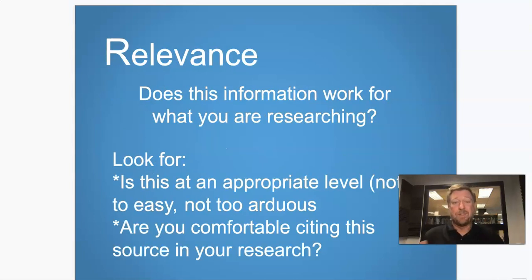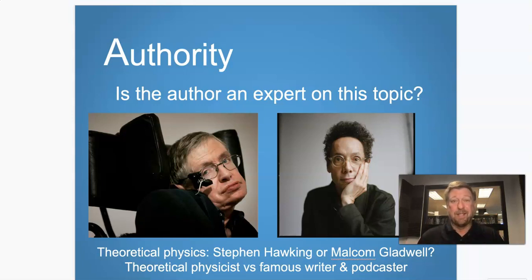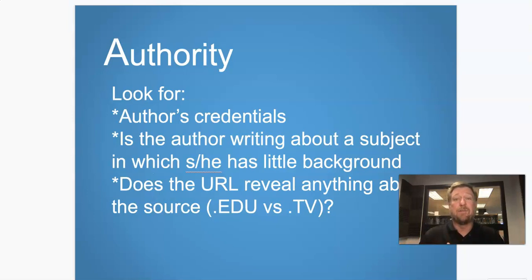Relevance — does it matter to what you're looking for? Is it at an appropriate level, kind of the Goldilocks test — is it too easy, is it too hard? Are you comfortable citing this in your research? Authority — is the author an expert? If you're doing something about theoretical physics and have a choice between Stephen Hawking and Malcolm Gladwell, Stephen Hawking was one of the world's preeminent theoretical physicists, whereas Malcolm Gladwell is a phenomenal author and speaker, but not an expert in theoretical physics.